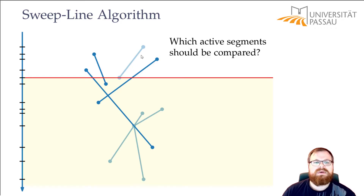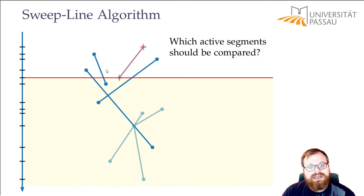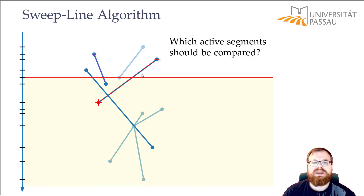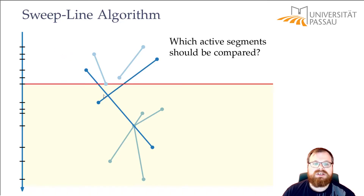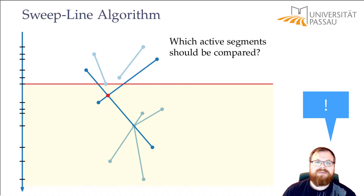We keep moving. Now we get to the end of this segment and remove it from our sweep line. Now this segment no longer lies between the other two, so we have to compare these two segments and figure out if they intersect — because now it is possible that at some point there will be an intersection between them. We keep moving, remove the next one. Now again these two are neighbors on the sweep line, we compare them, and at this point we find this intersection point.